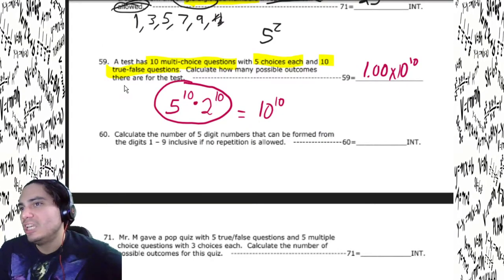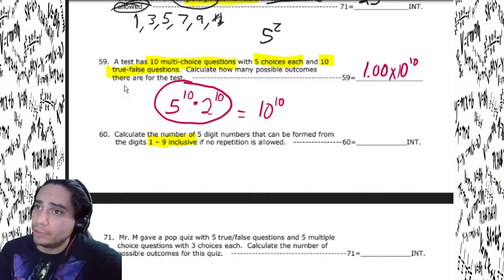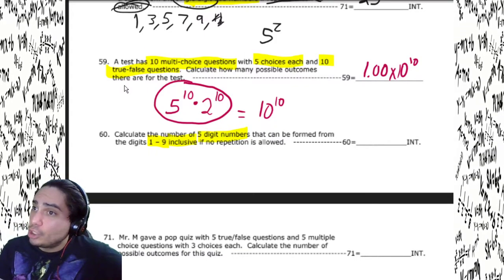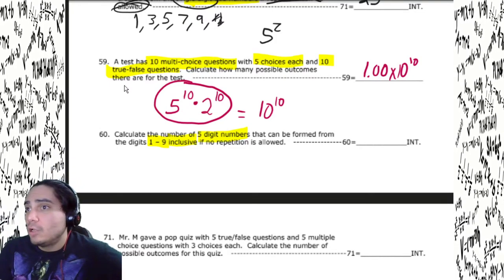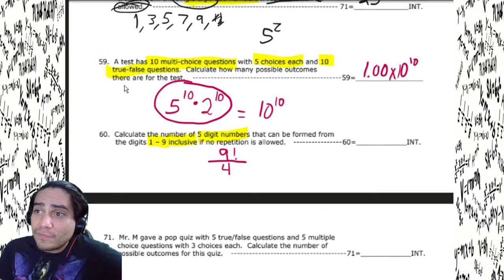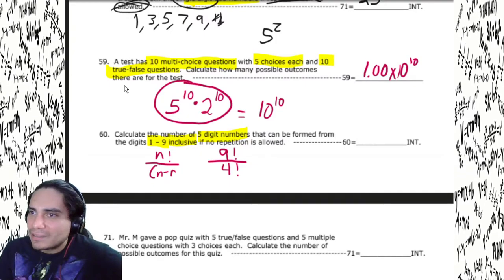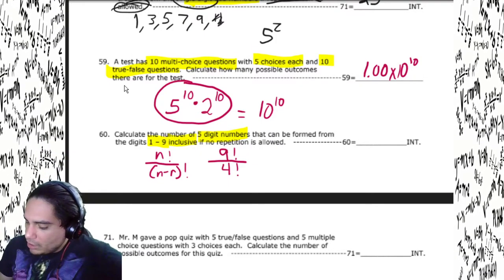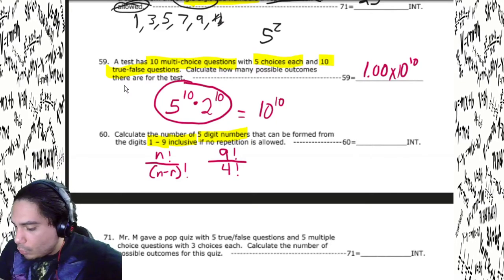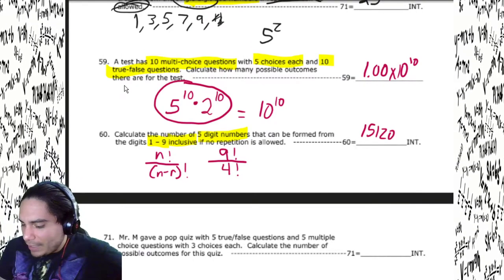Calculate the number of five-digit numbers that can be formed from the digits one through nine — key: we're not having ten choices, we only have nine because zero is not included, and we're selecting five digits with no repetition. Order matters. So it's 9! / (9−5)! = 9! / 4!. Hit 9 factorial, divide by 4 factorial — it's an integer problem, hit yellow show — and we get 15,120.